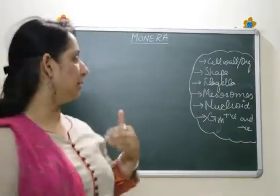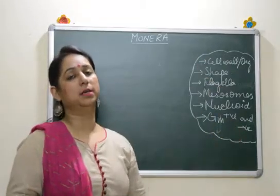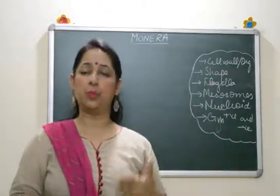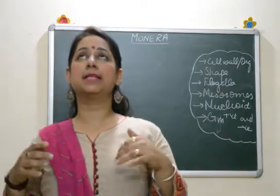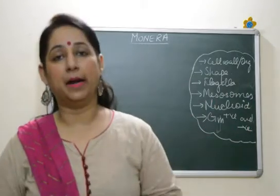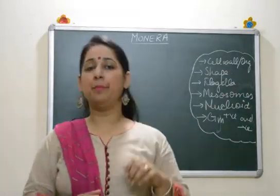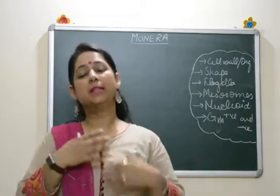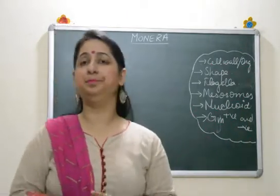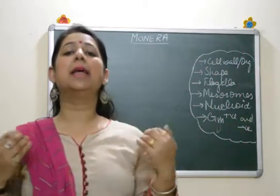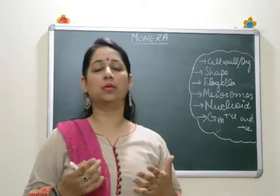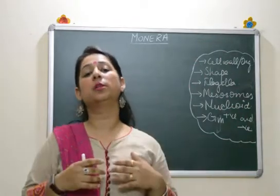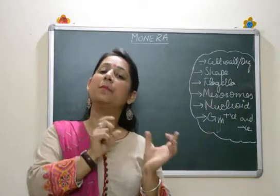Starting up with the kingdom, we will be discussing about the different characteristics — the different characters on the basis of which organisms are categorized into this group. When I say Kingdom Monera, we are talking about almost all the bacteria. Monera basically involves bacteria: be it normal bacteria, archaebacteria, cyanobacteria, mycoplasma — all bacteria are categorized under Monera. They basically share similar characteristics but are categorized into different groups on the basis of specific characters which differ from bacteria to bacteria.